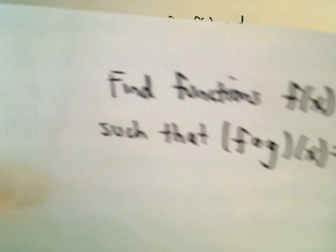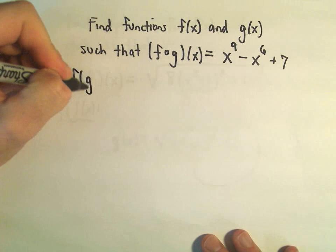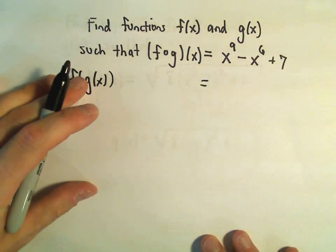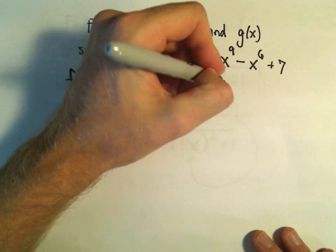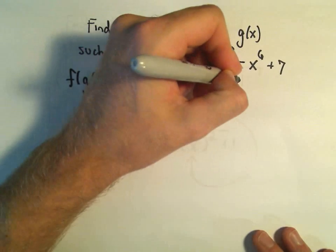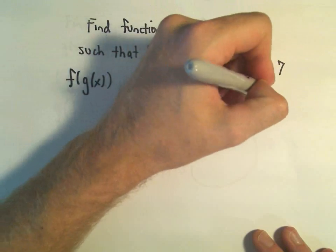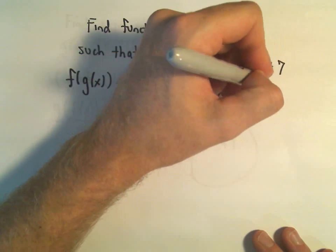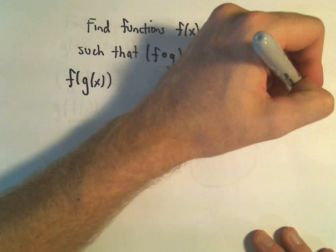We want f and g so that we get x⁹ - x⁶ + 7. This one's a little trickier, I think. So again, we want f of g of x. The thing I'm going to do is maybe try to rewrite this one a little bit. Let's see. We could write this as (x³)³. That would give me x⁹ minus (x³)². That would give me x⁶. And then plus 7.